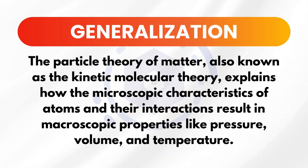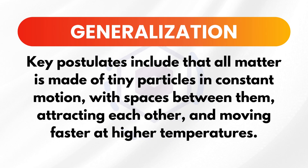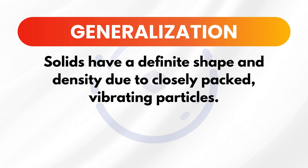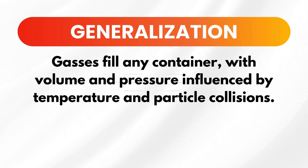To summarize, the particle theory of matter, also known as the kinetic molecular theory, explains how the microscopic characteristics of atoms and their interactions result in macroscopic properties like pressure, volume, and temperature. Matter exists in three phases — solid, liquid, and gas — and transitions between them based on particle behavior. Key postulates include that all matter is made of tiny particles in constant motion, with spaces between them, attracting each other, and moving faster at higher temperatures. Solids have a definite shape and density due to closely packed, vibrating particles. Liquids flow and have variable density, viscosity, and surface tension influenced by intermolecular forces. Gases fill any container with volume and pressure influenced by temperature and particle collisions.